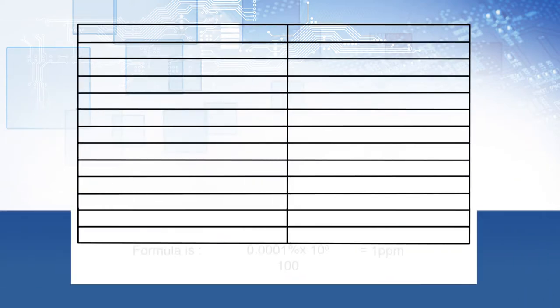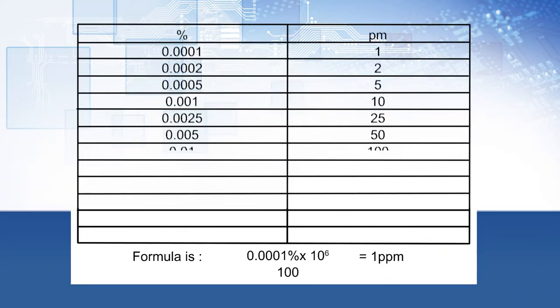Something to remember is that tolerance and stability are cumulative when managing your accuracy budget. They are typically expressed in parts per million, or sometimes as a percentage of the frequency.